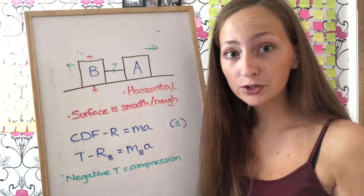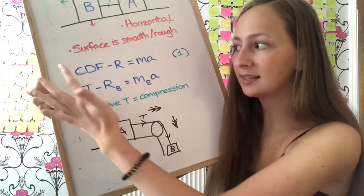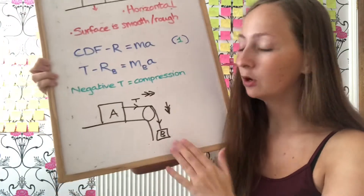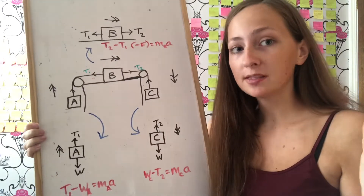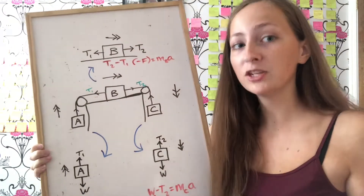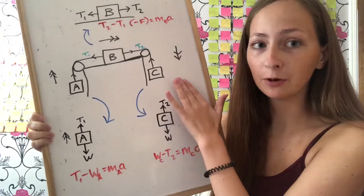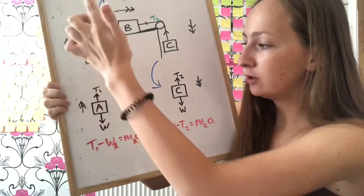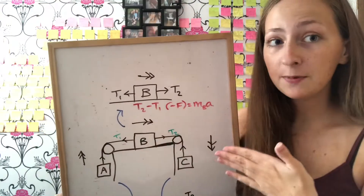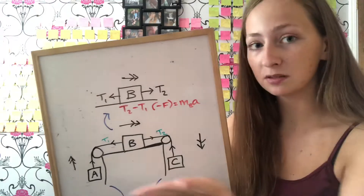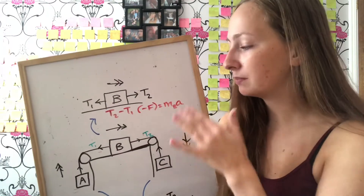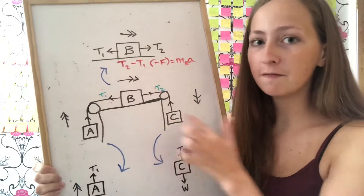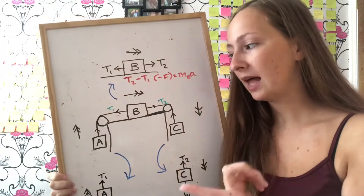This links back to the pulley system, except the current driving force is the tension. For the vertical parts: going upwards it's T minus W equals ma for A's mass; going downwards it's W minus T equals ma for C's mass. For B on the table moving horizontally, it's T2 minus T1, possibly minus friction if the table is rough, equals B's mass times acceleration. These separate out into simultaneous equations which you then solve.